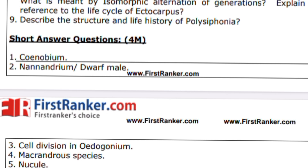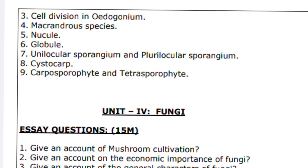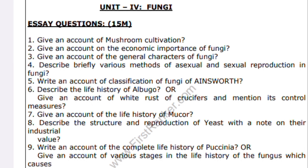For passing, at least learn three questions. Cell division, nucleus, globule — these are important questions from Unit 4, which is quite an easy chapter. Topics include mushroom cultivation compared to units one, two, and three.